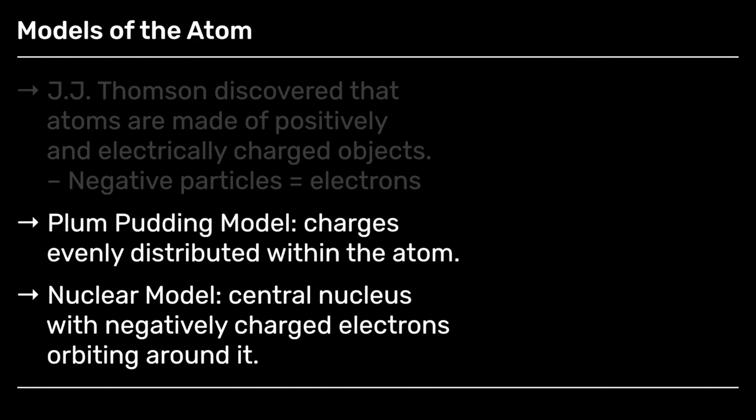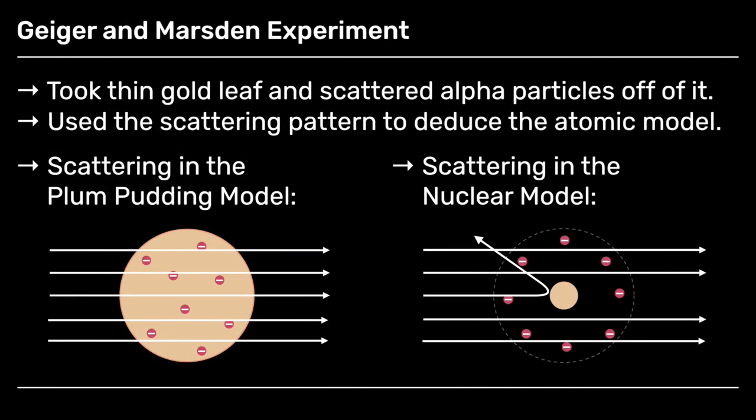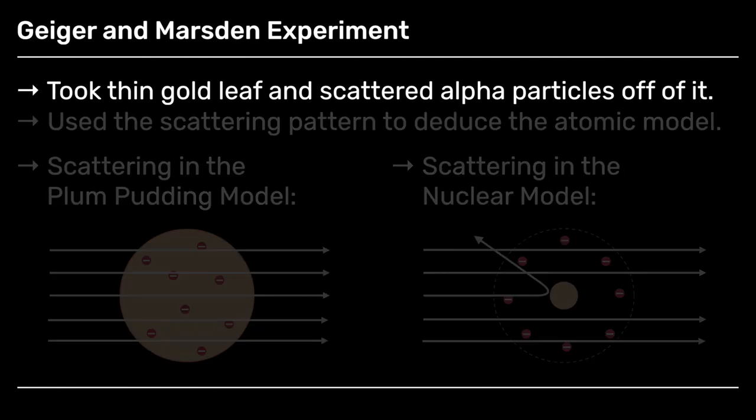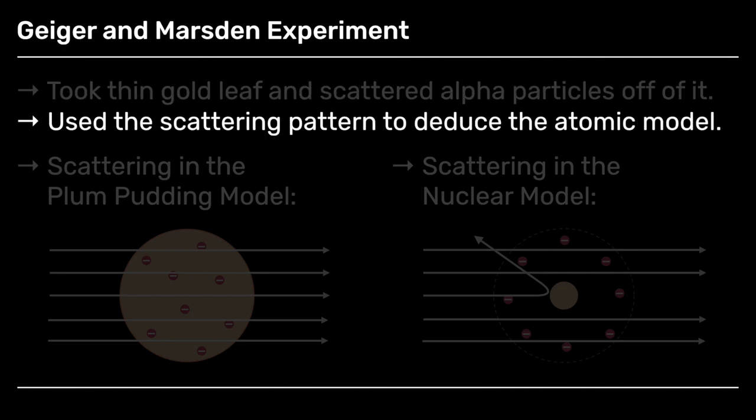This experiment was done in Manchester by Geiger and Marsden. And what they did was to take gold leaf, which they could make super incredibly thin, so that it was basically one atom thick, and then scatter a particle off it, called an alpha particle, and then through its scattering work out whether the plum pudding model or the nuclear model was the reflection of reality. Was it the positive charges in the middle and the negative charges on the outside, or were the charges just evenly spread?